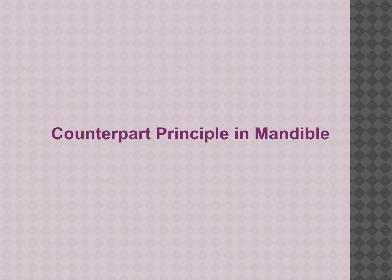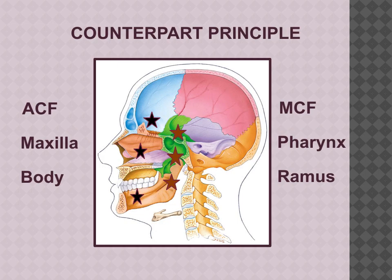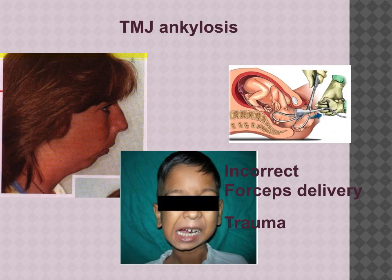Next is the counterpart principle in the mandible. Certain structures act as counterparts: the anterior cranial fossa, maxilla, and body of the mandible are counterparts; and the middle cranial fossa, pharynx, and ramus of the mandible are counterparts. There must be a balance and equilibrium maintained among them. If growth is disturbed in one part, the adjacent structure is also hampered. Clinically, in forceps delivery where the condyle and condylar cartilage are injured, TMJ ankylosis results — the mandible fails to grow on that side, causing the entire mandible to shift toward the side of ankylosis.